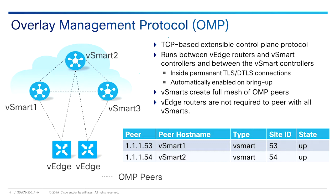OMP allows all of our V-Edge devices to communicate directly over any type of network — MPLS, Internet, point-to-point, Metro Ethernet, Satellite, Cellular, or anything else. If you can ping the other side, we can build a tunnel across it.